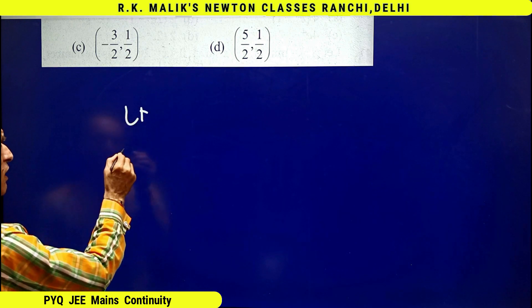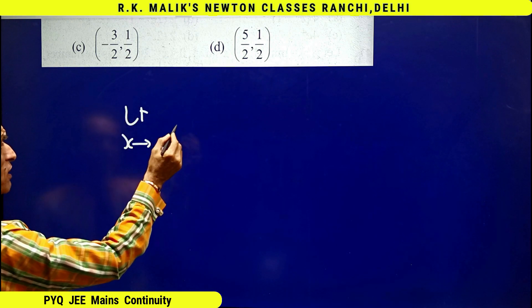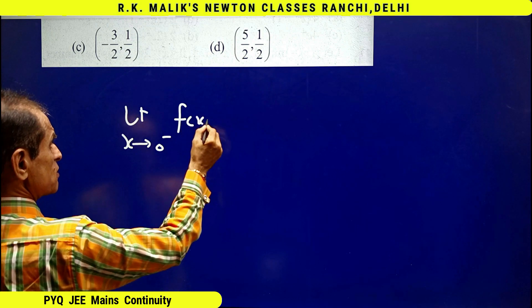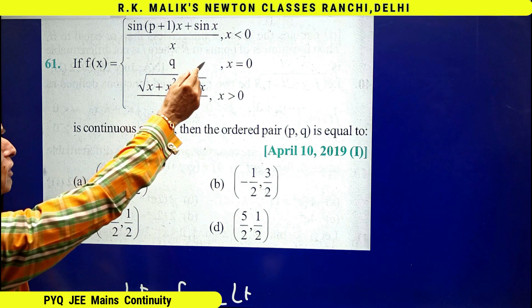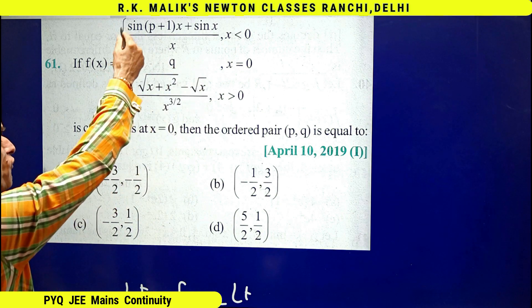To find left hand limit, limit as x tends to 0 minus f(x). For negative values of x, f(x) is defined by this expression.